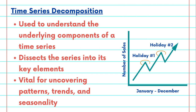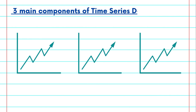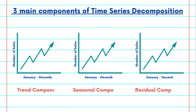The decomposition of a time series typically consists of three components. The first is the trend component. The trend component captures the long-term direction or movement in the data — it represents the underlying growth or decline. For instance, in our sales data, the trend component shows the overall increase in sales over time.